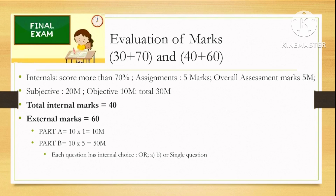Coming to the external marks, it will be divided into Part A and Part B. Part A has 10 questions each with 1 mark — these are short answer questions. Part B has long answer type with 5 questions with internal choices in the form of OR. All questions will cover every unit of the syllabus, so unit 1 will give 2 questions in your final exam question paper with internal choice. The 10-mark question can be a single question or divided into subdivisions A and B with 5 marks each.